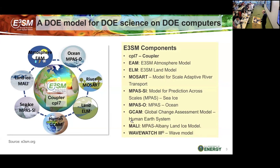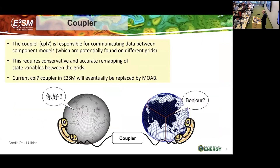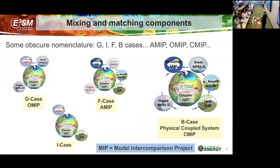We also have optional components, as Dave mentioned: GCAM for HES applications, MALI for land ice, and WaveWatch 3 for the wave model. All those components talk together through the coupler, which is the centerpiece of E3SM. The coupler is responsible for communication of data between components. Because those components work on different grids, it requires remapping between the grids — that's one of the big functions of the coupler. It has to remap conservatively and accurately between one grid to another, so that one grid can communicate seamlessly with another. That's the magic of the coupler.